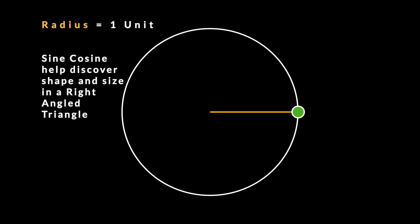Sine and cosine are functions that help us discover the elements of size and shape of a right angle triangle in a unit circle. A unit circle is where the radius is one unit which is done for convenience and calculation purposes.